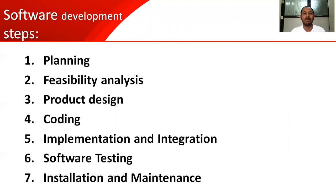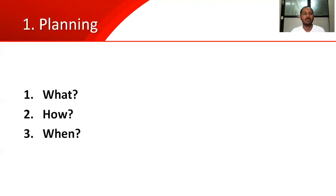To understand system programming, you must know the different steps involved in software development. These are the 7 steps: planning, feasibility analysis, product design, coding, implementation and integration, software testing, and installation and maintenance. Let us see them one by one.